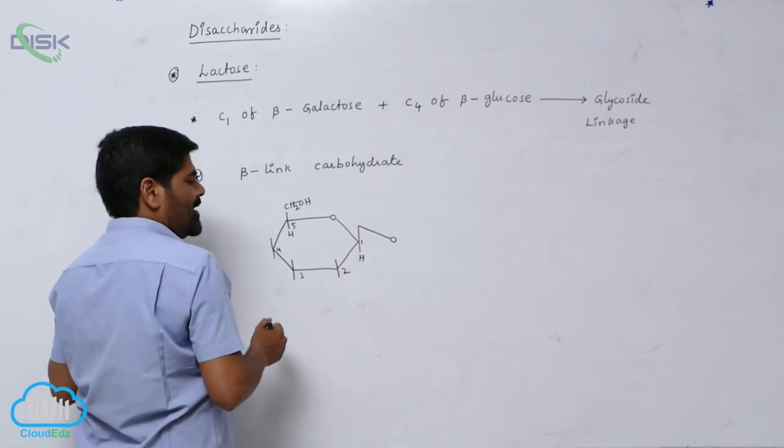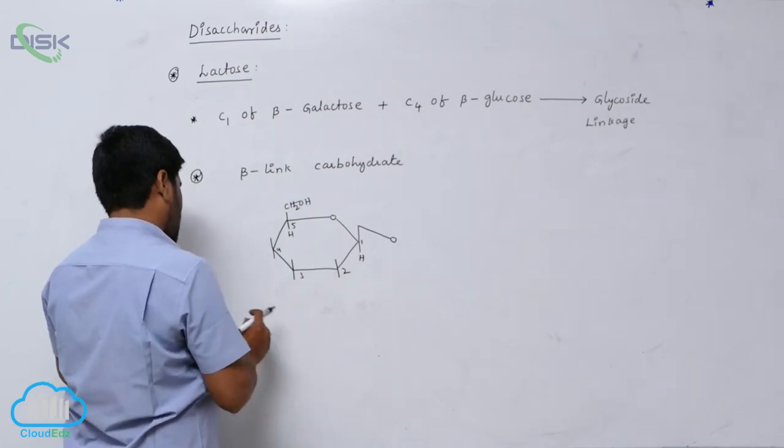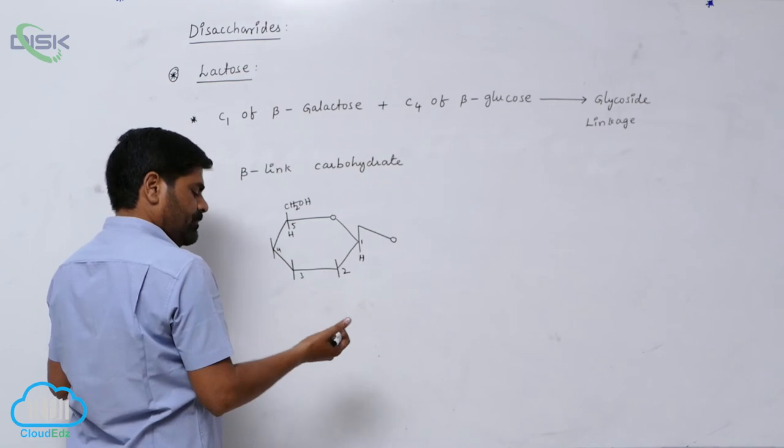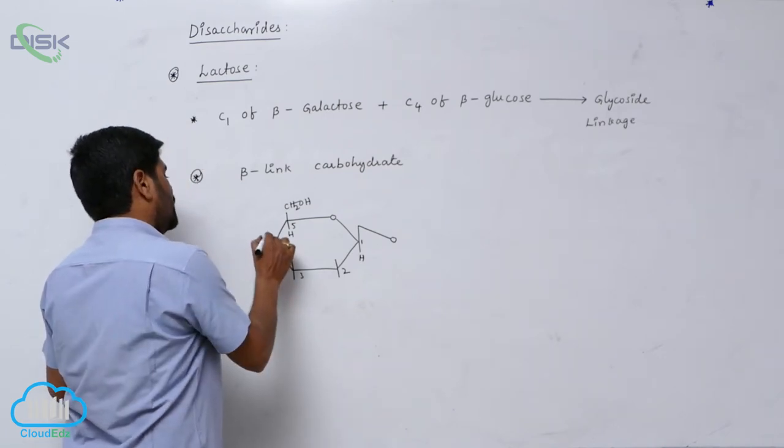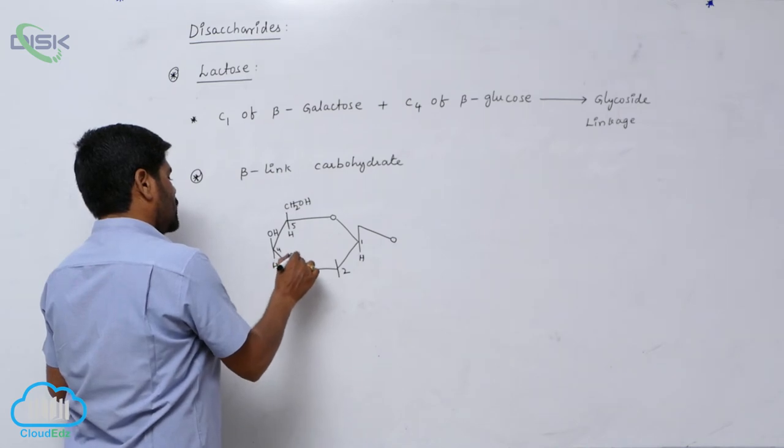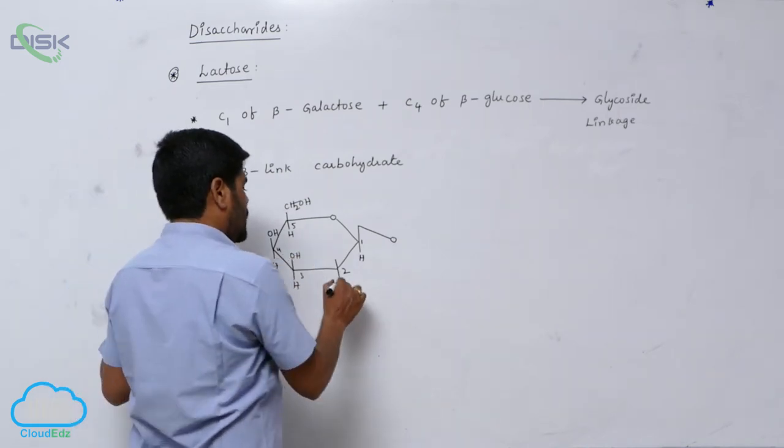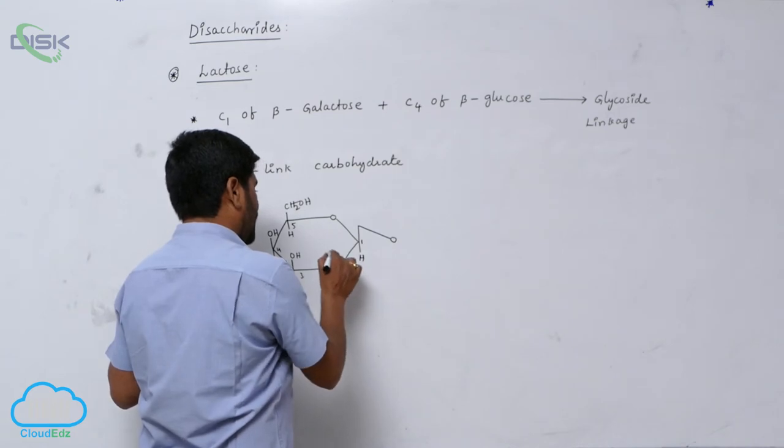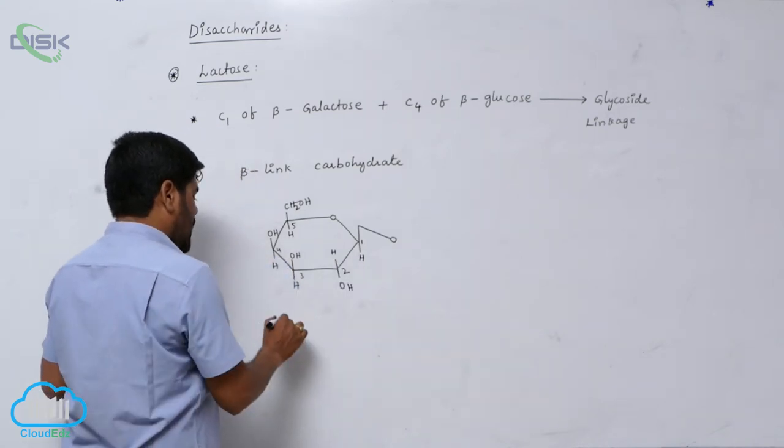C4 carbon is left side, so that is the reason why when it is left side, it is what? Above the plane. Hydrogen, it is also above the plane. Then it is below the plane like this.